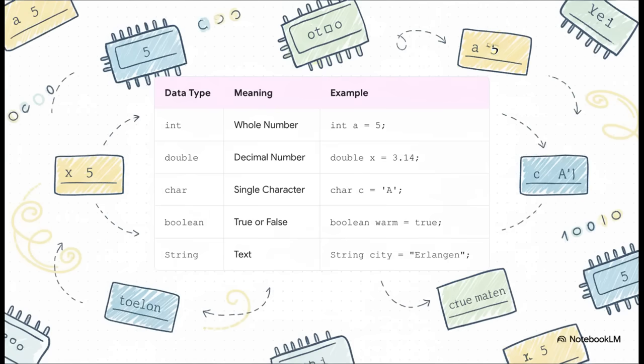You've got int for whole numbers, 5, 10, 100, whatever. Then there's double for when you need decimal points, like 3.14. Char is for just one single character, like the letter A. Boolean is super simple. It's either true or it's false. That's it. And finally, string, notice the capital S. That's for any chunk of text you can imagine.